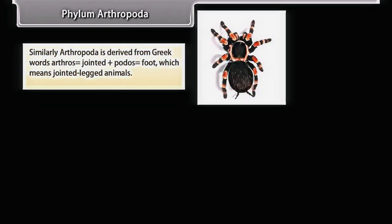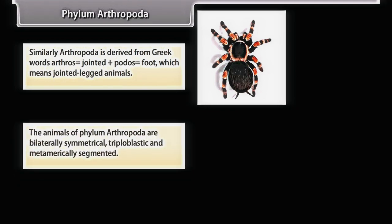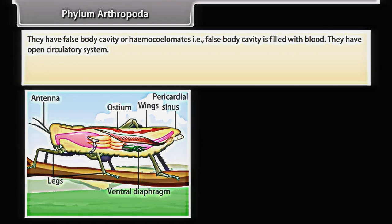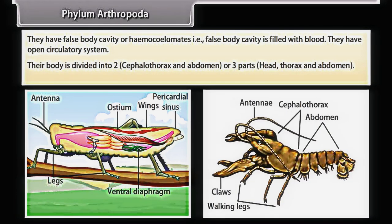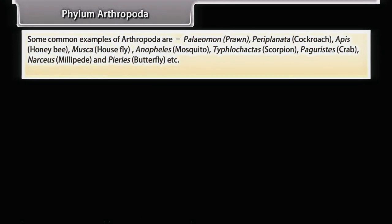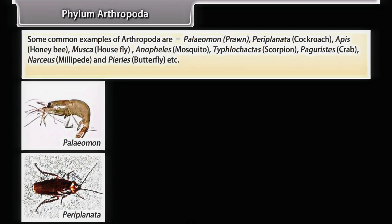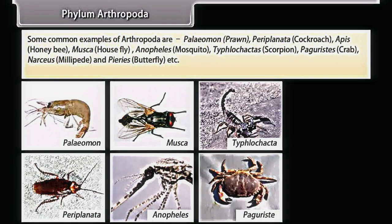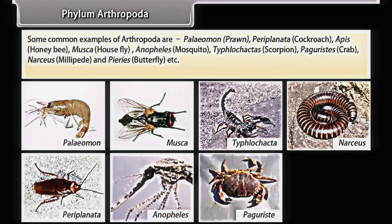Arthropoda is derived from Greek words 'arthros' (jointed) and 'podos' (foot), meaning jointed-legged animals. They are bilaterally symmetrical, triploblastic, and metamerically segmented. They have a false body cavity — haemocoelomates — filled with blood, and an open circulatory system. Their body is divided into two parts (cephalothorax and abdomen) or three parts (head, thorax, and abdomen). Arthropoda form the largest group of animals; about nine lakh species are known. Common examples are Palaemon (prawn), Periplaneta (cockroach), Apis (honeybee), Musca (housefly), Anopheles (mosquito), Buthus (scorpion), Pagurus (crab), Narceus (millipede), and Papilio (butterfly).